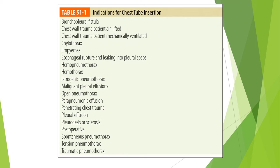The table of indications for chest tube insertion includes: broncopleural fistula, chest wall trauma, chylothorax, empyema, haemopneumothorax, haemothorax, iatrogenic pneumothorax, malignant pleural effusion, pleural effusion, pleural disease, pleurosclerosis, postoperative indications, tension pneumothorax, and traumatic pneumothorax.